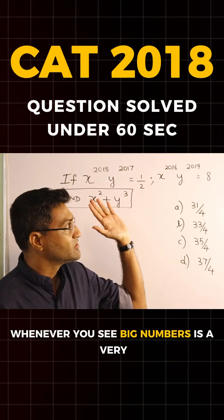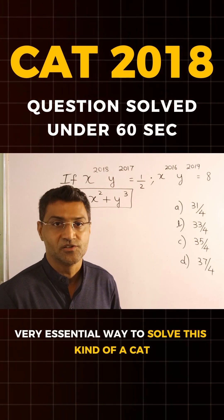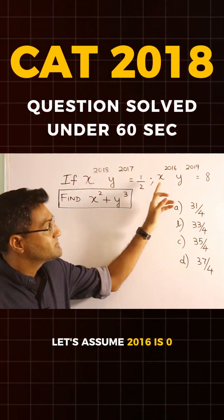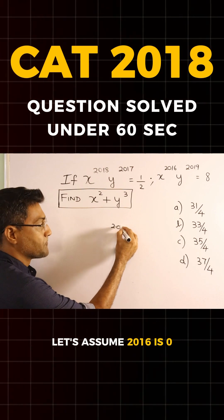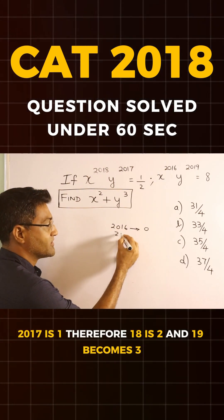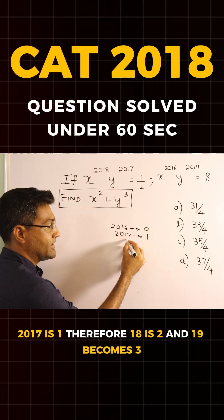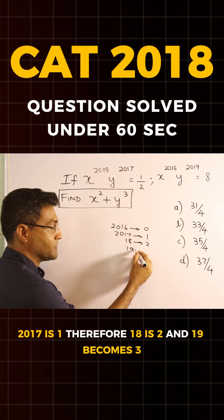Working with smaller numbers whenever you see big numbers is a very essential way to solve this kind of CAT question. Let's assume 2016 is 0, 2017 is 1, therefore 18 is 2, and 19 becomes 3.